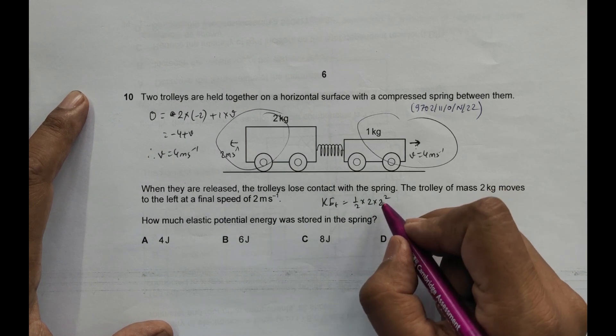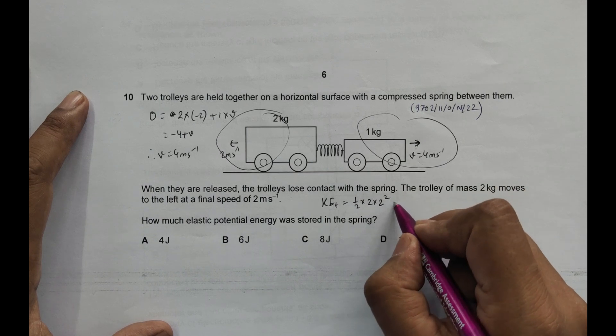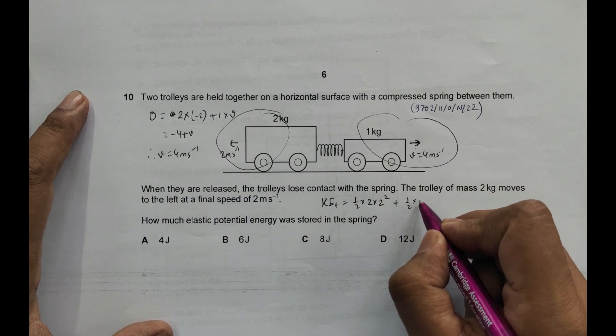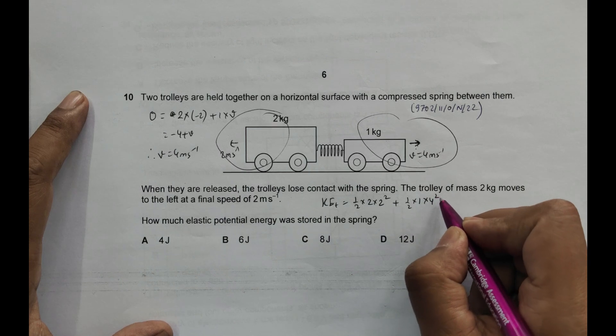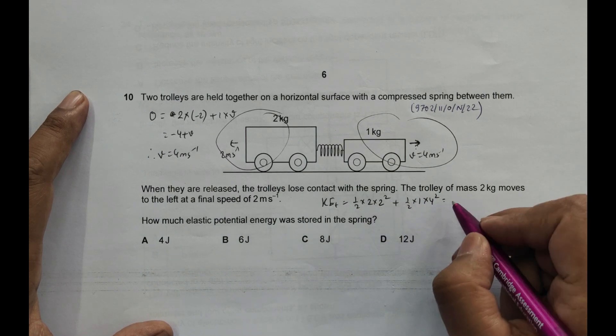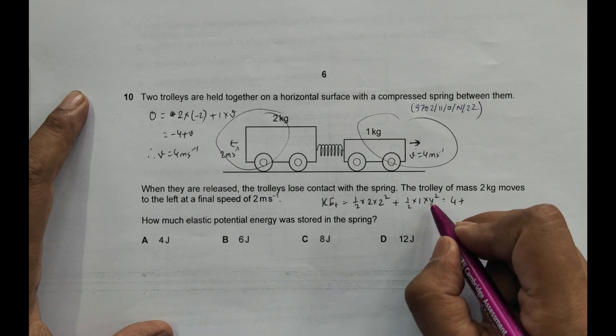I can say minus 2 squared, or I can use plus. It is 1/2 into mass is 1 kg into 4 squared. So this equals, 2 cancels, it is 4 plus 16 by 2 equals 8, equals 12 joules.